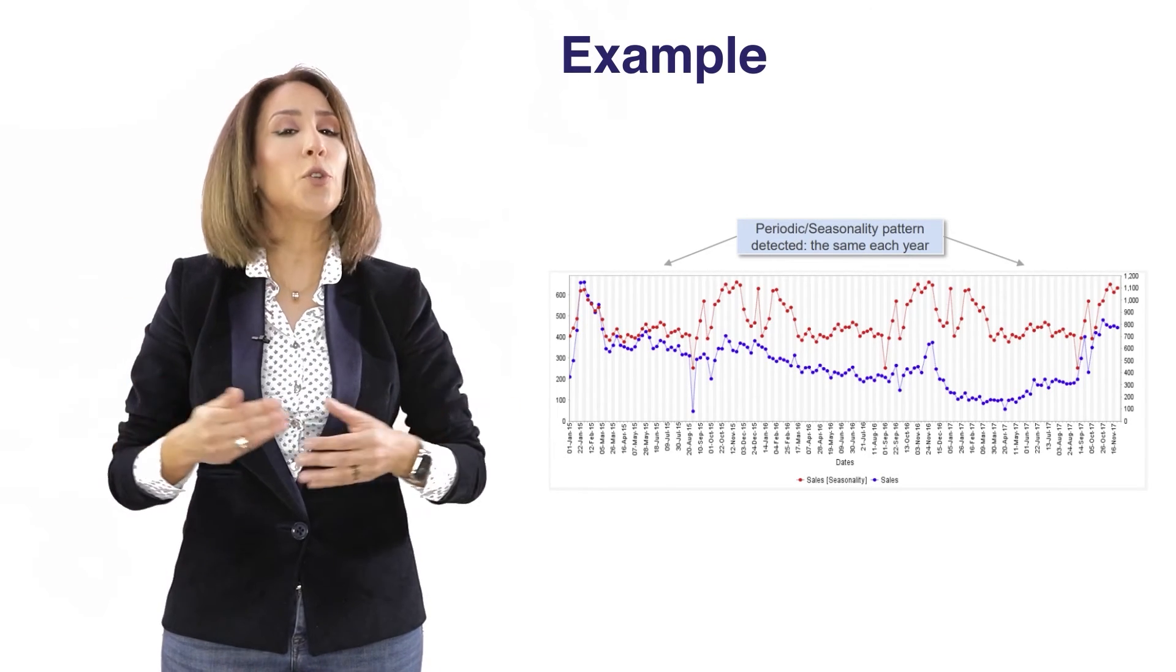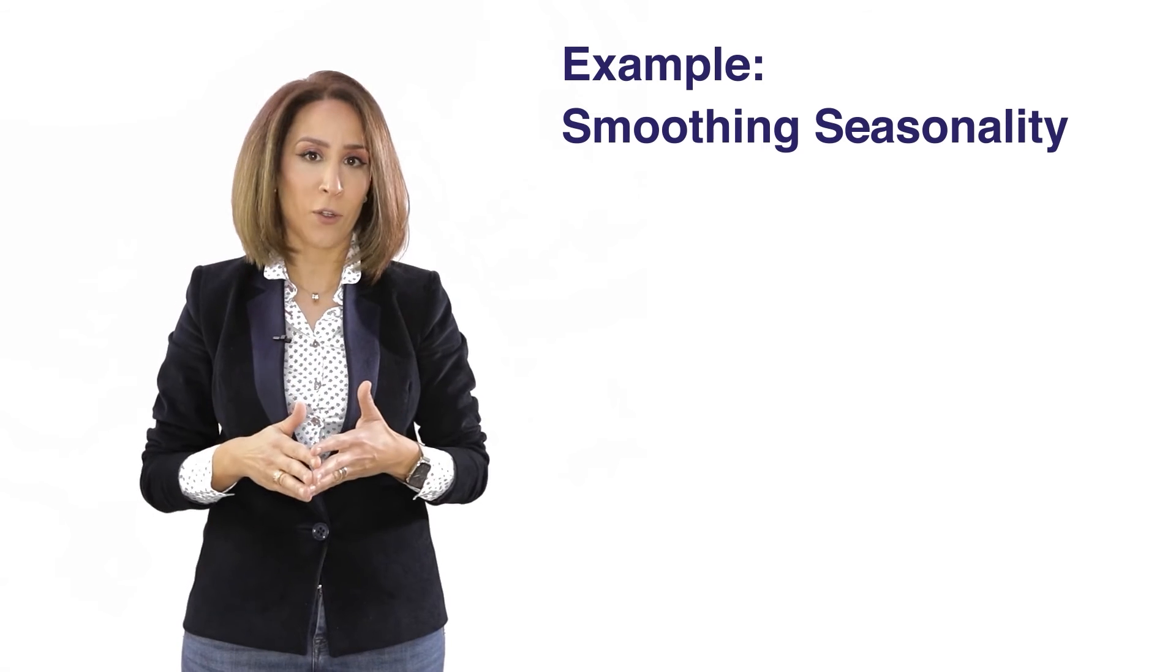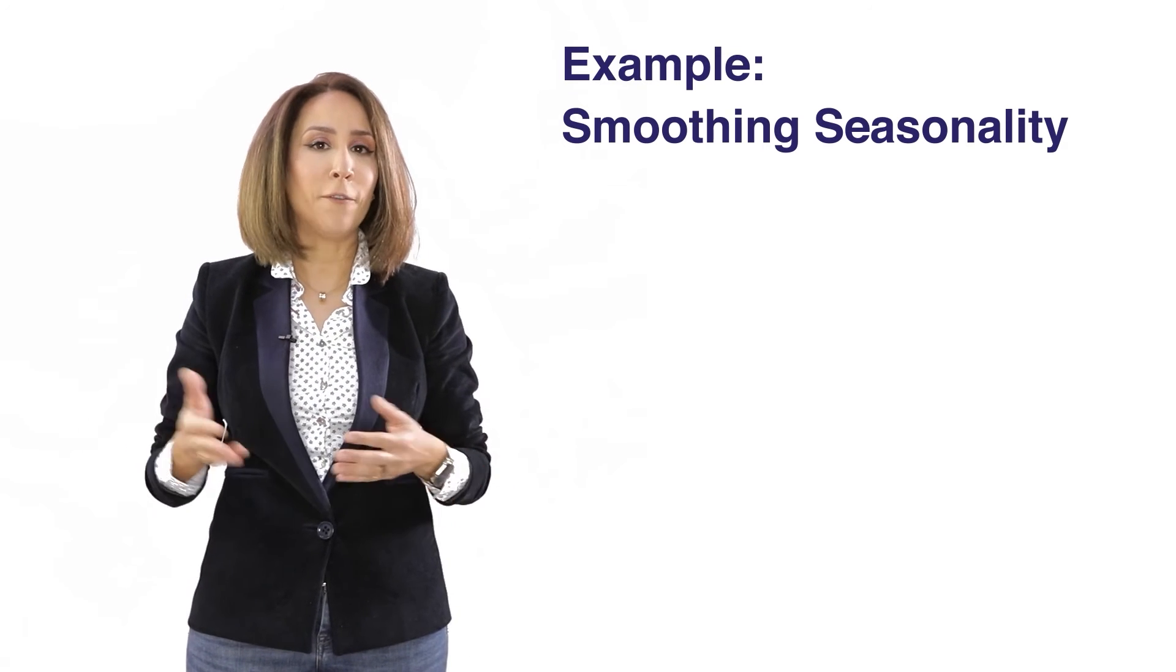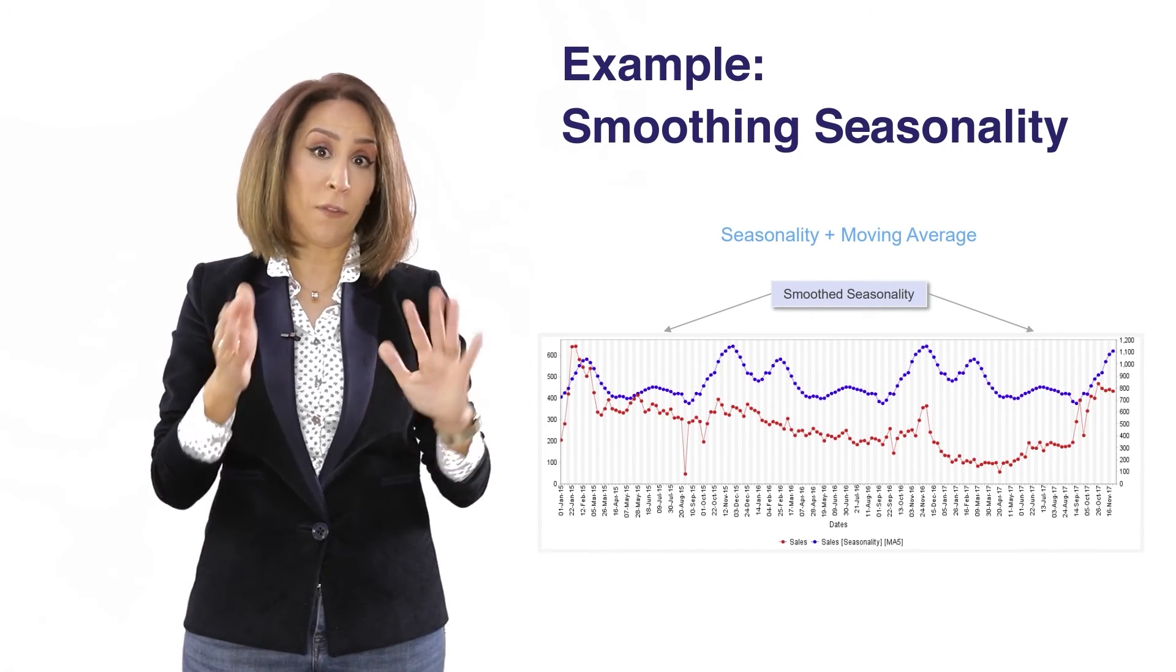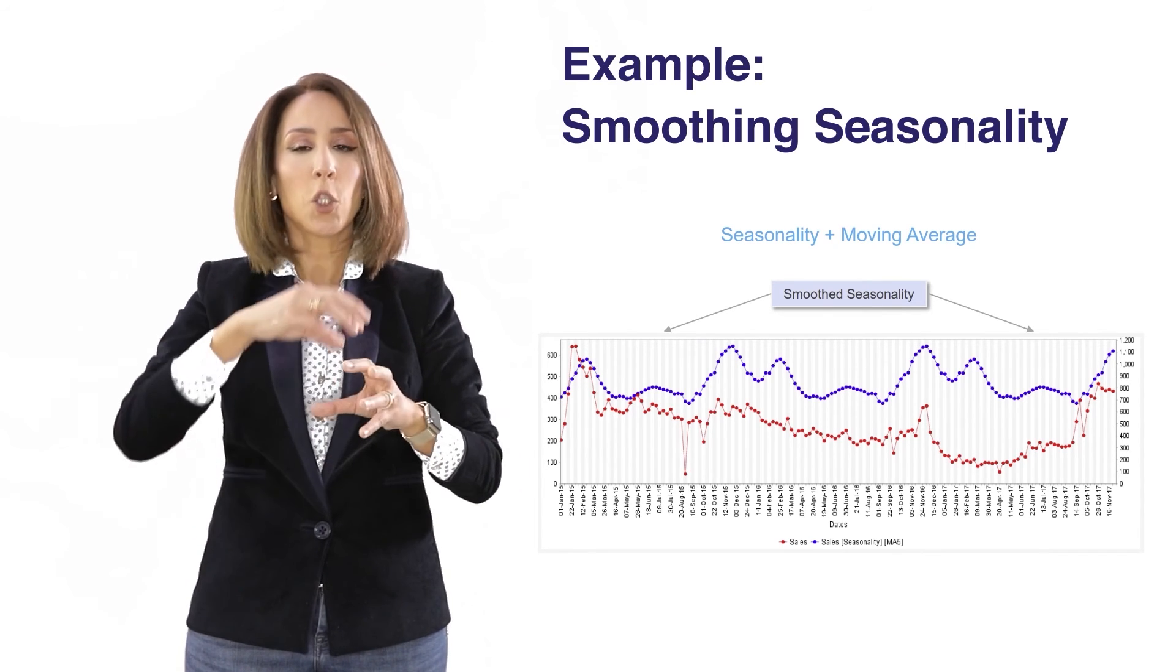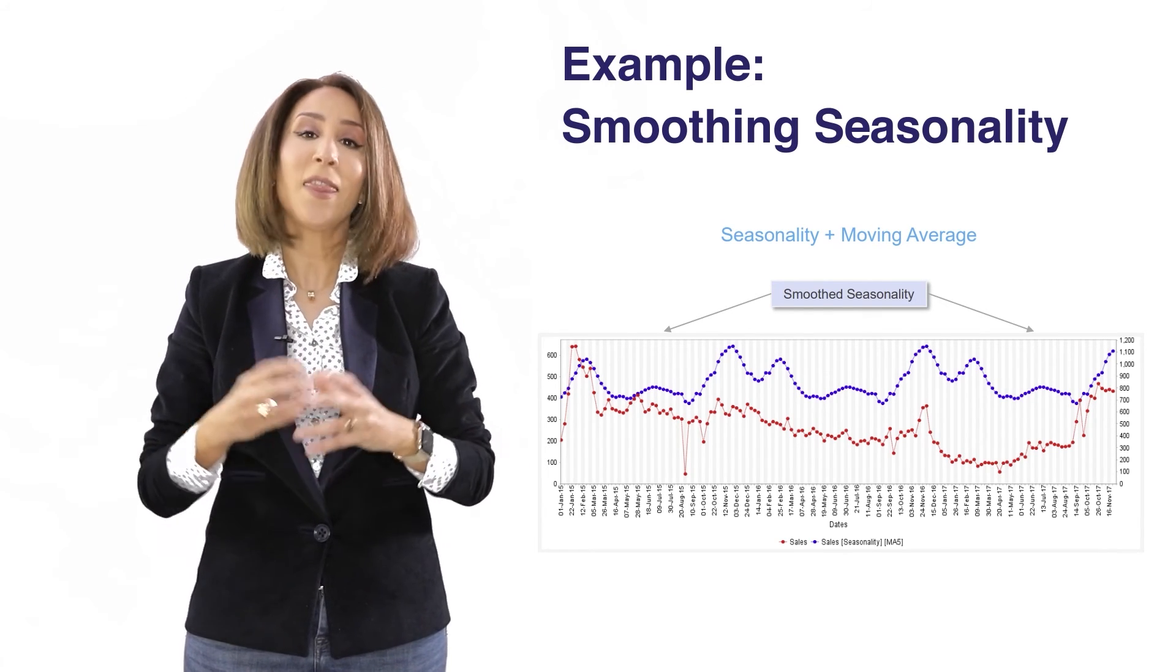This variable could be entered into your model to model the impact that market seasonality will have on your product. Remember, when we created seasonality we created it out of our sales variable, which is a dependent variable. We're creating an independent variable based on our dependent variable, which might cause problems. So it's advisable to apply another processor to the seasonal factor—for example, smoothing it out by applying either the median filter or moving average. On my screen you can see a version of the seasonal factor we created earlier with a moving average applied, smoothing out the edges and making it depart more from the sales data we're trying to explain.